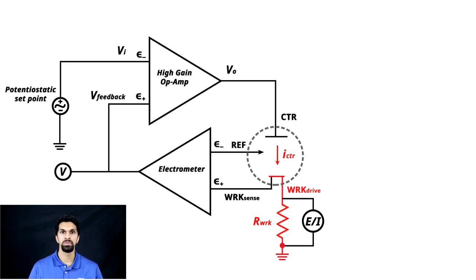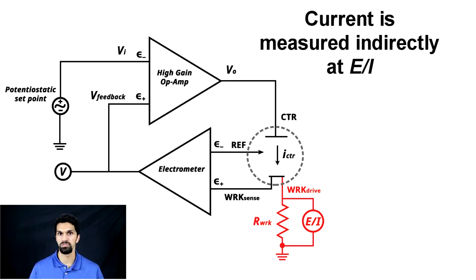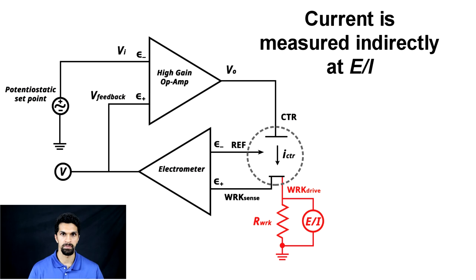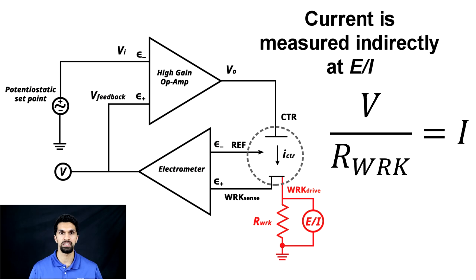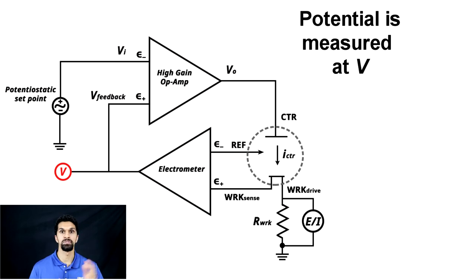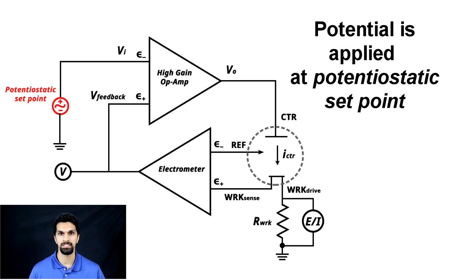Current flows between the counter electrode and the working drive electrode, then across the sense resistor R-work, and into ground. A voltmeter Ei measures the voltage across R-work. We measure current at the working electrode indirectly: using Ohm's law, current equals voltage divided by resistance. So the current is measured indirectly through the voltmeter, and the potential is measured at the output of the electrometer voltmeter — applied through the potentiostatic setpoint. That is how a potentiostat works.